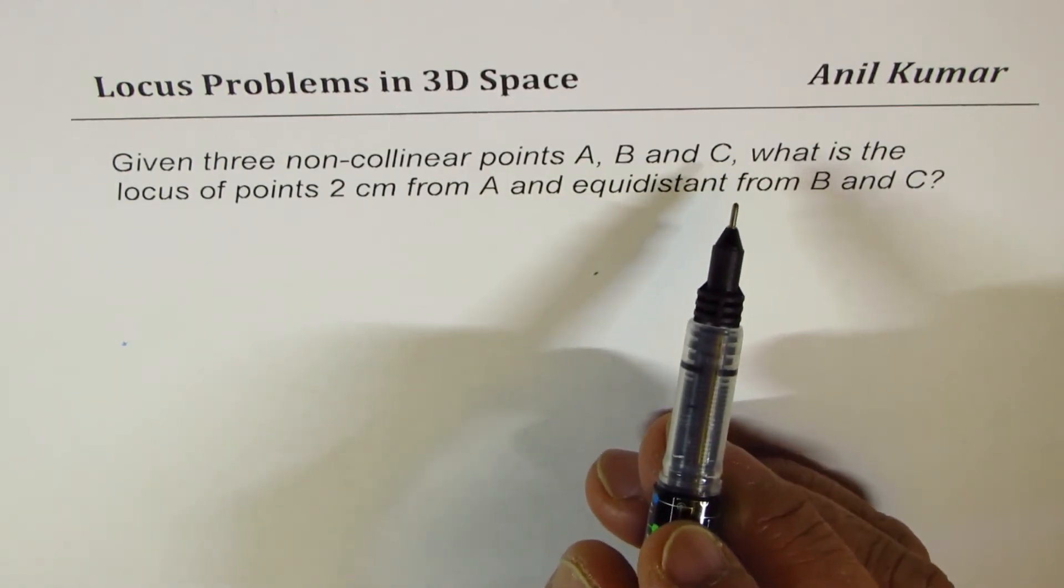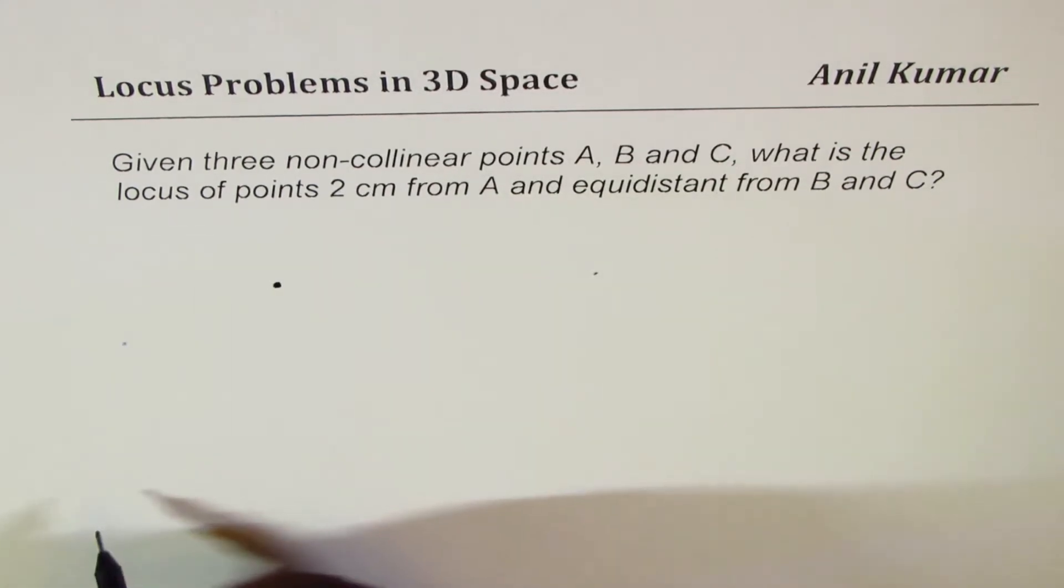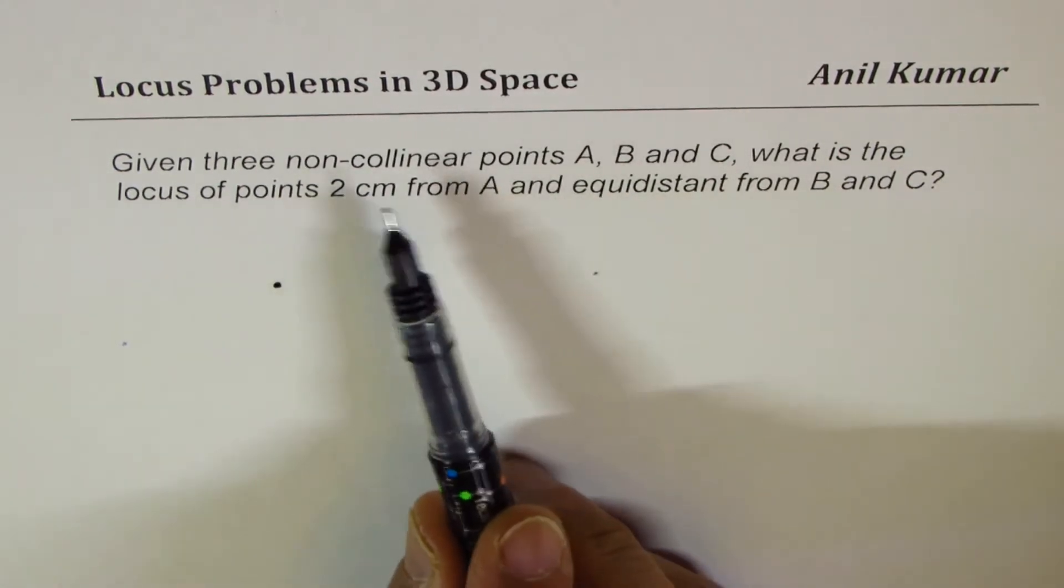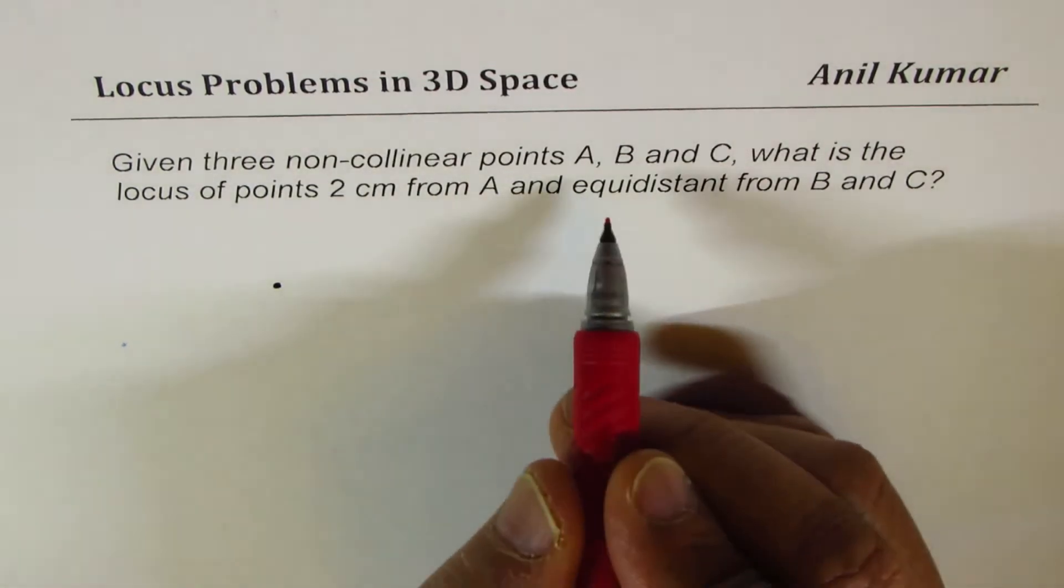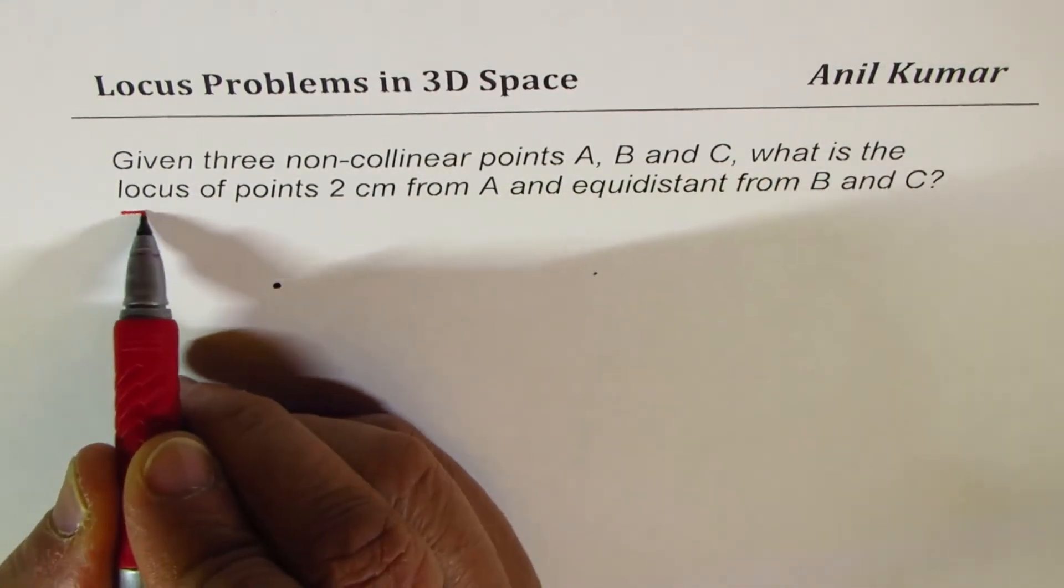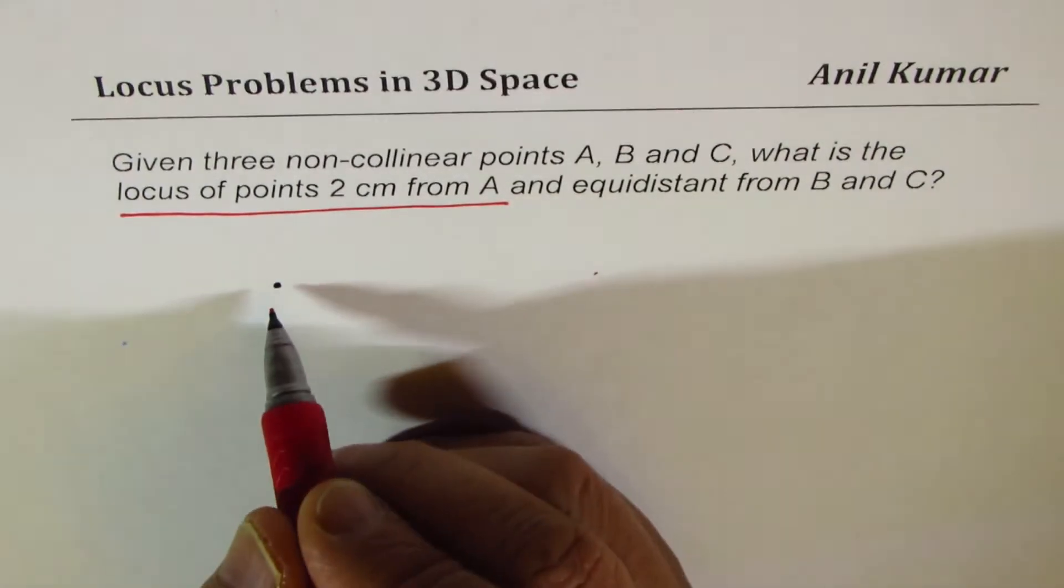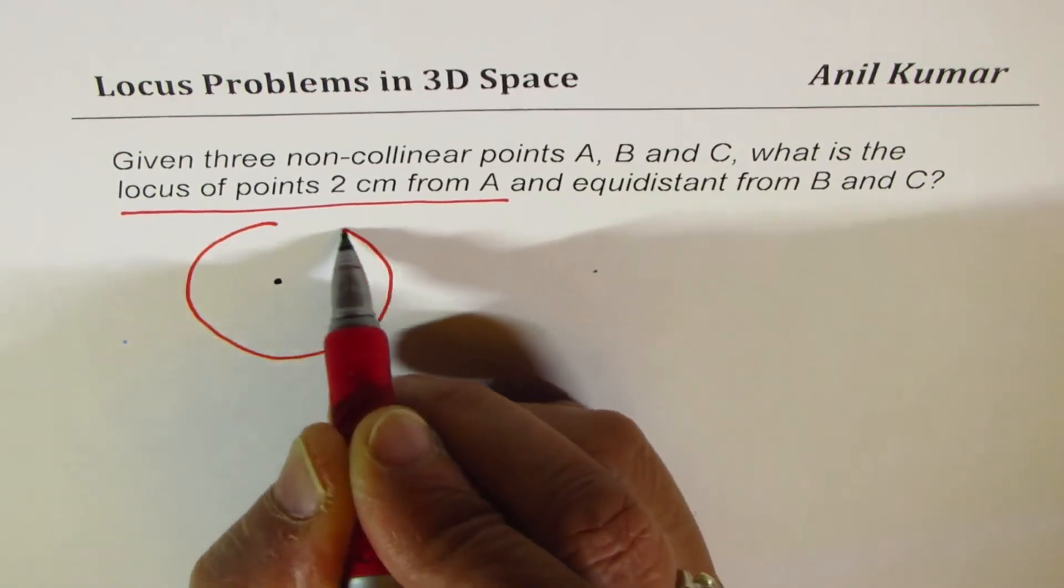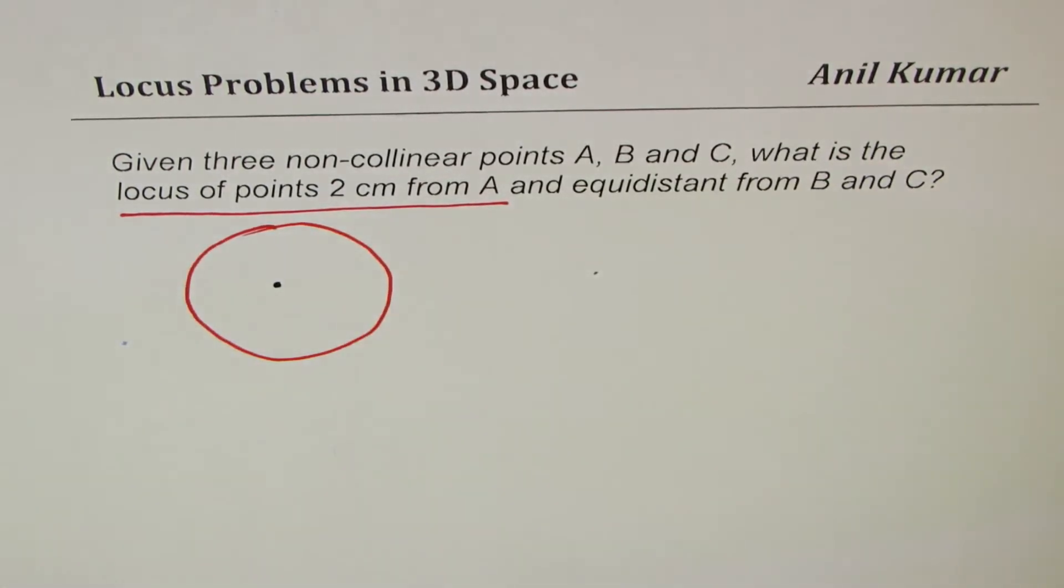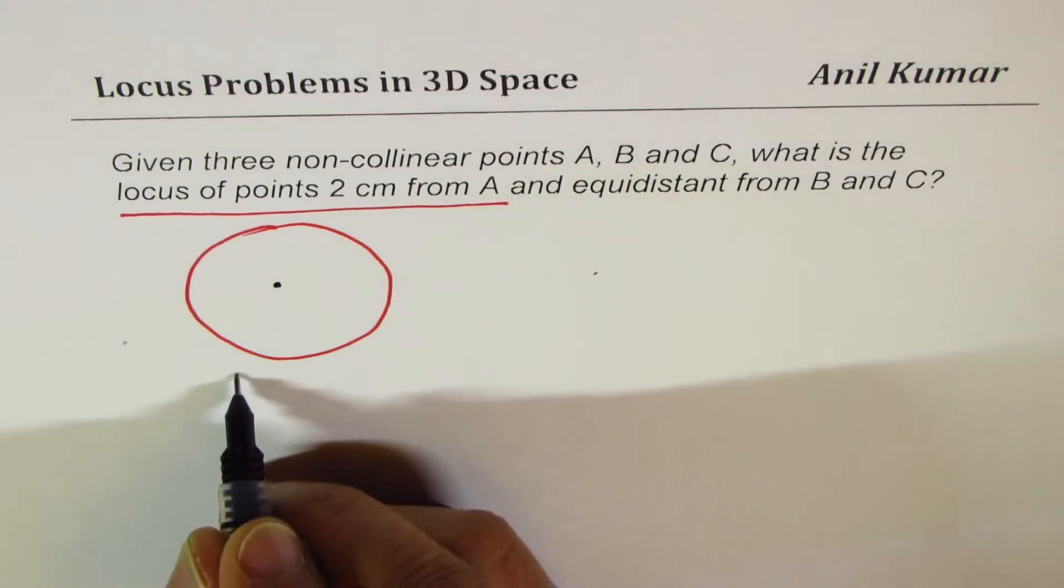They could have any specific position. Let us say, point A is right here. So, when we say point A, what is the locus of points 2 cm from A? That means, from here in space, what do we have 2 cm away? We have a sphere, right? Not a circle.